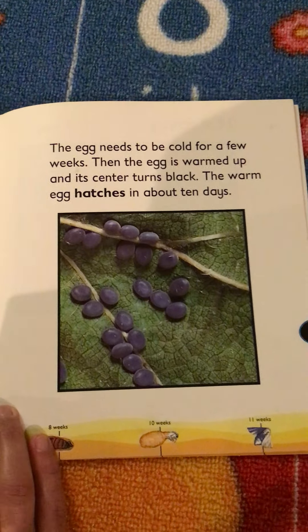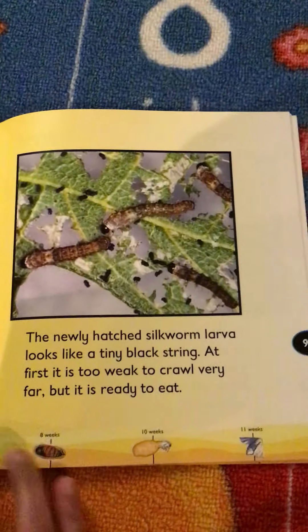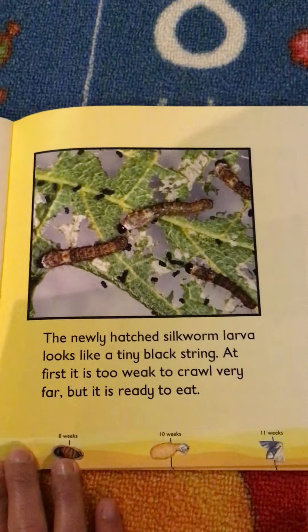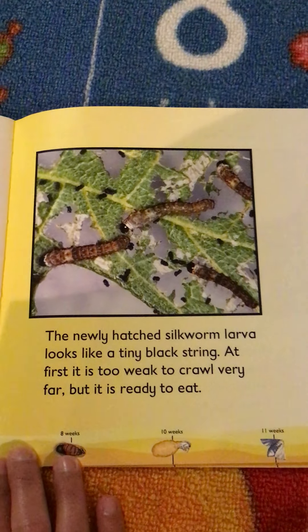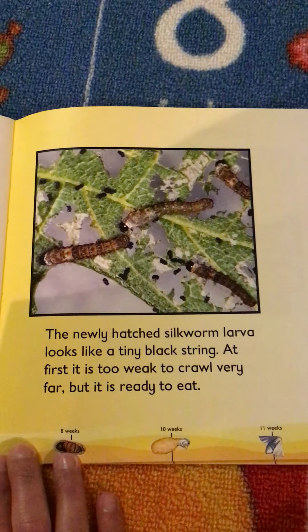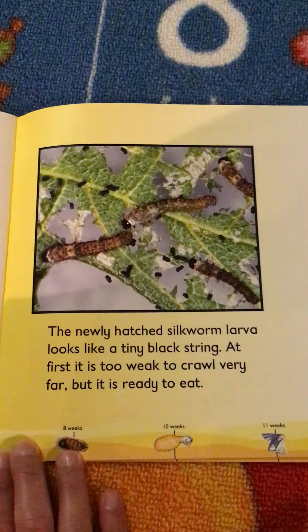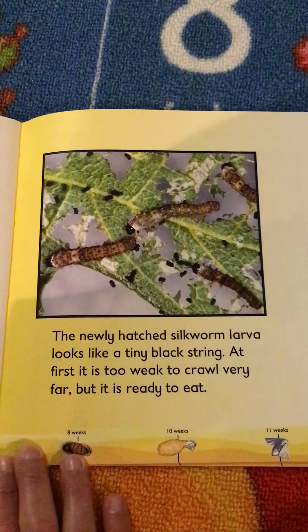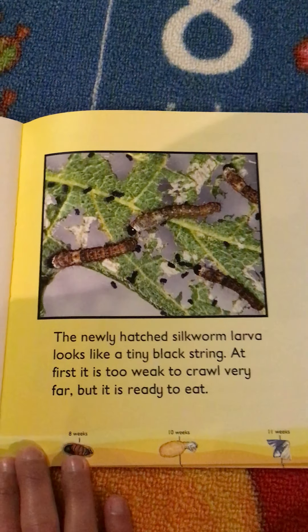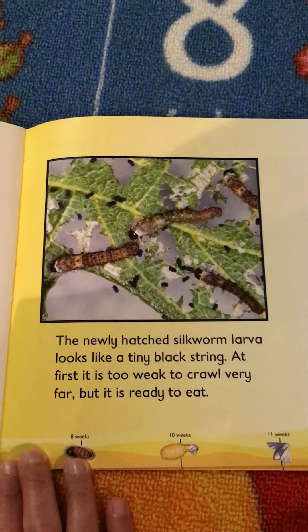When the tiny silkworm larva is ready to hatch, it bites a hole in the egg and then it wiggles out. The newly hatched silkworm larva looks like a tiny black string. At first, it's too weak to crawl very far, but it is ready to eat.